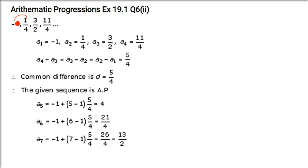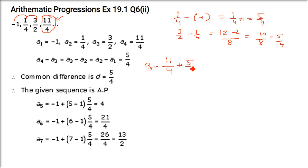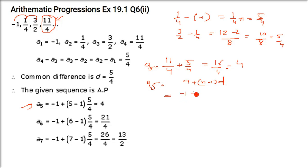Second AP: -1, 1/4, 3/2, 11/4. Check: 1/4 - (-1) = 5/4, then 3/2 - 1/4 = 6/4 - 1/4 = 5/4. Common difference is 5/4, so this is an AP. To find more terms, add 5/4 to the last term: 11/4 + 5/4 = 16/4 = 4. Using the formula for a₅: a + (n-1)d = -1 + (4)(5/4) = -1 + 5 = 4.